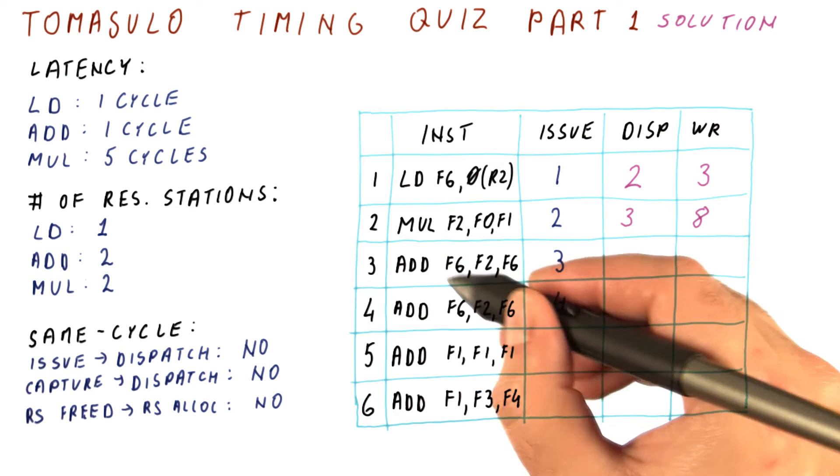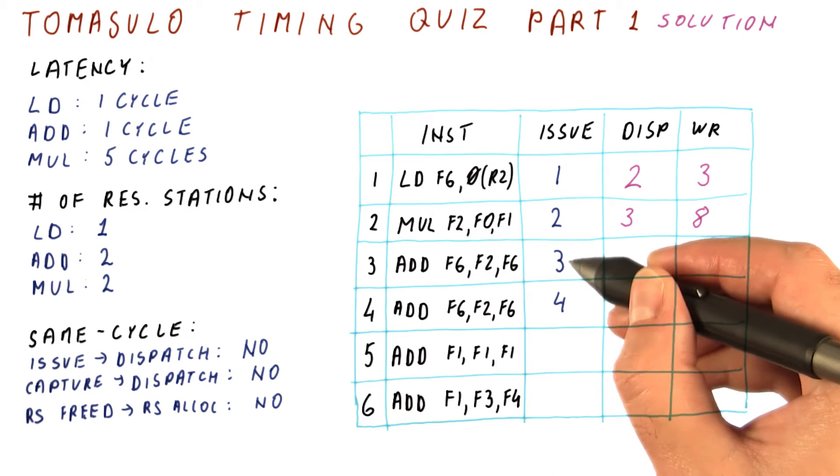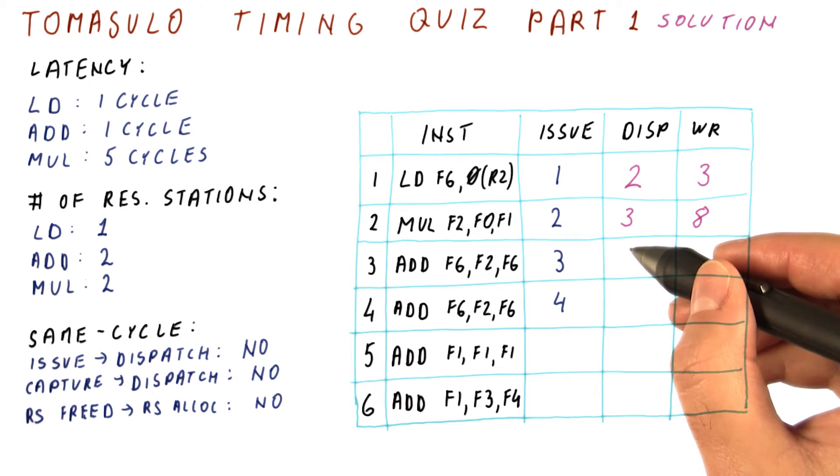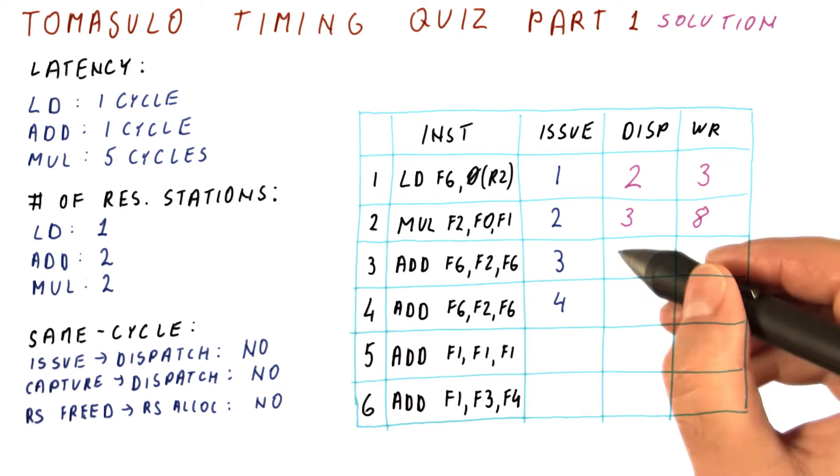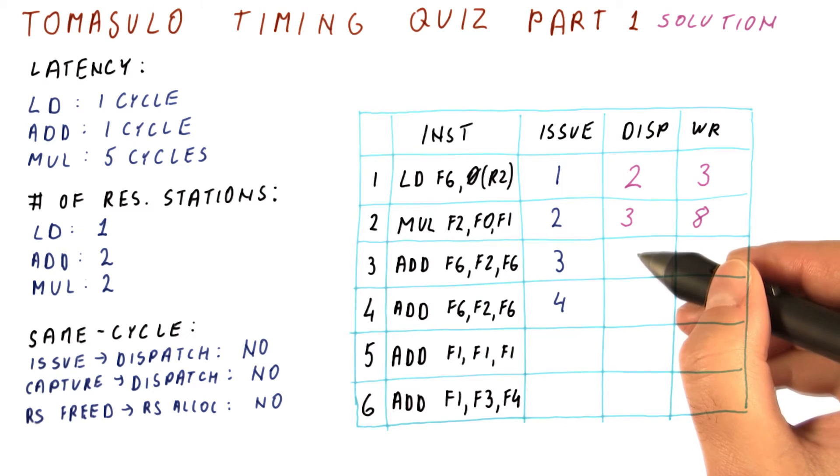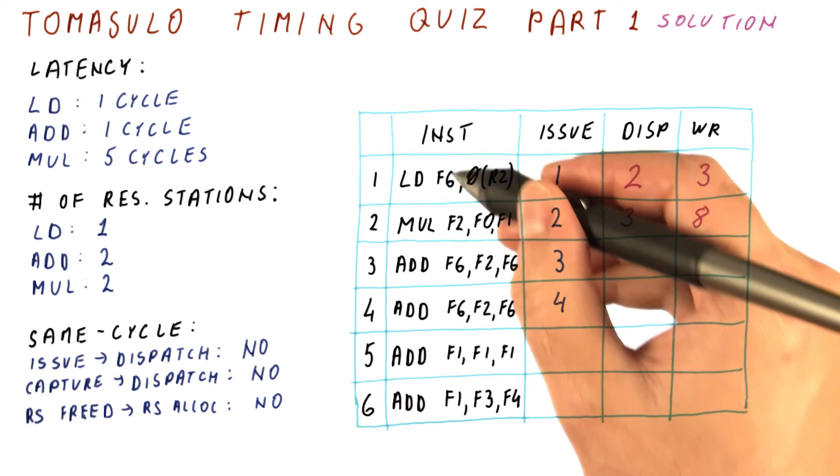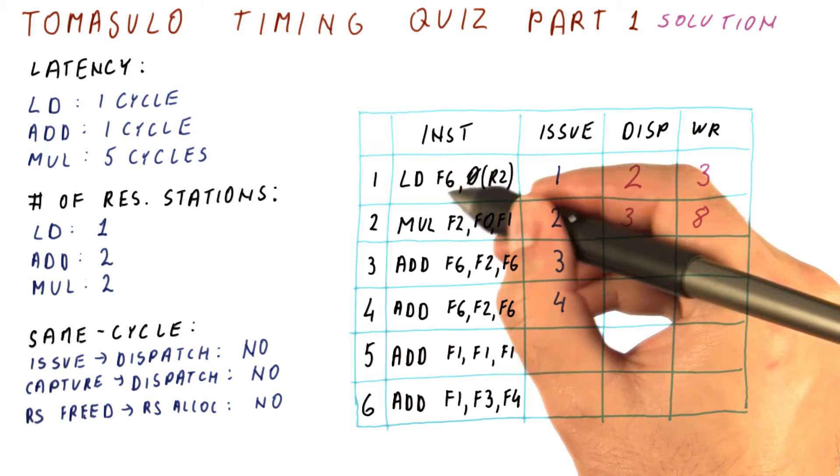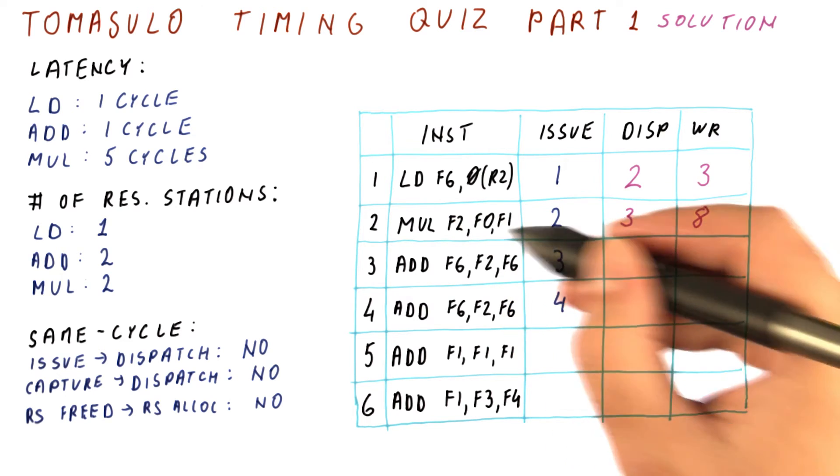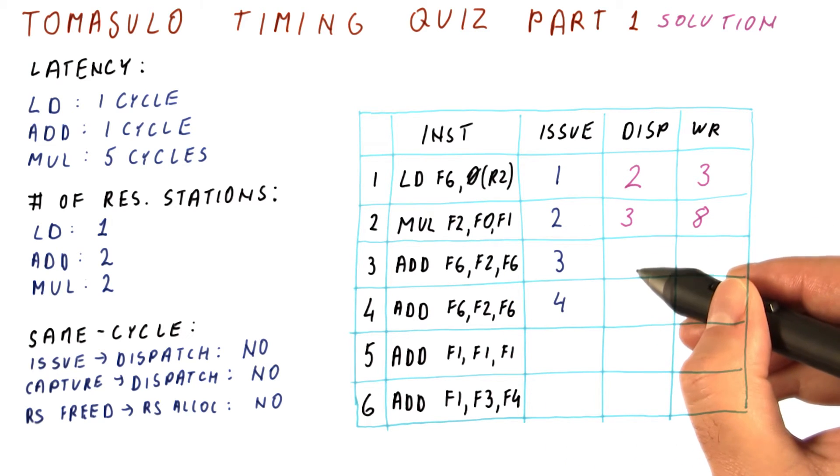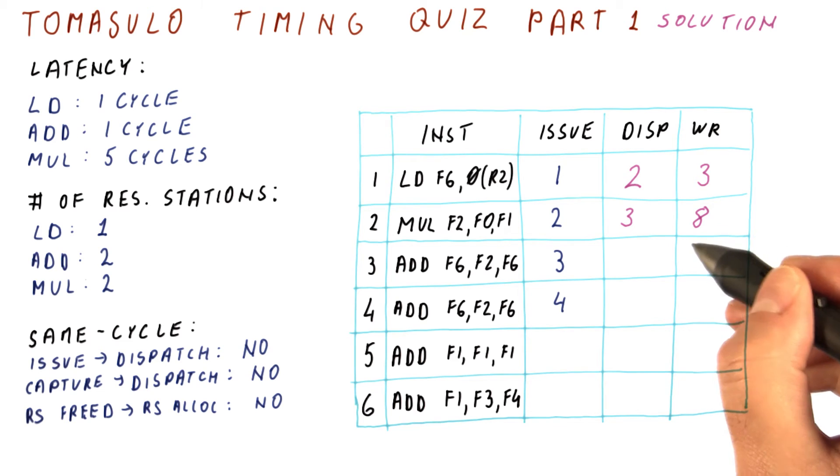The add here is issued in cycle three. It cannot dispatch in the same cycle, but it could dispatch in cycle four if all of its operands are available. However, it needs F2 and F6, which are produced by the load and multiply. So it will not be able to dispatch in cycle four because the multiply result is only available in cycle eight.